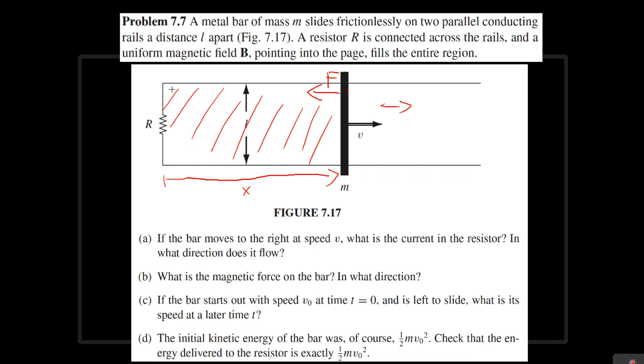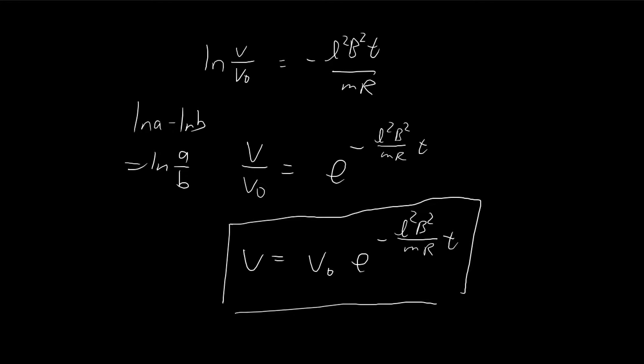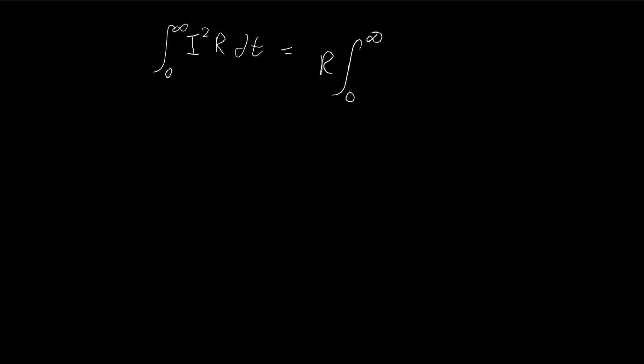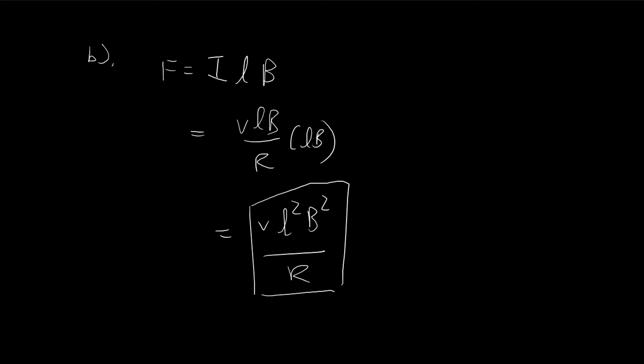Now for part D, we need to show that the energy spent at the resistor is exactly equal to the initial kinetic energy. At any moment, the power — energy per second in watts — is equal to I²R. This is the amount of energy released at the resistor as heat per second. If we integrate this from zero to infinity, that gives the total energy released at the resistor. We expect this to equal ½MV₀², so let's prove that. R is a constant, we can pull it out. We know I is equal to VLB/R, and V is equal to V₀e^(−L²B²t/MR), so we substitute that in.